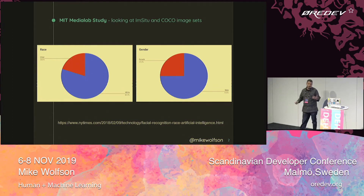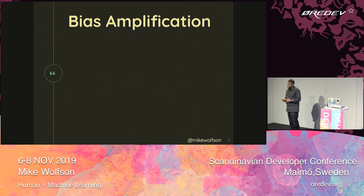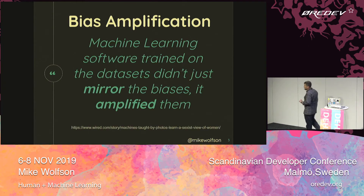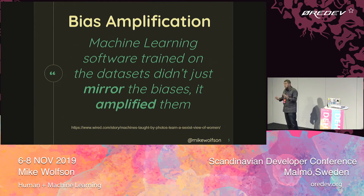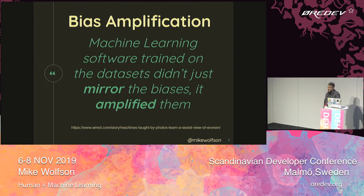And this is a huge problem, and I'm going to explain to you why. What the researchers discovered was that in machine learning systems, there's something called bias amplification. If you have a bad data set that doesn't have real-world data in there, machine learning software trained on bad data sets didn't just mirror the biases that existed — it actually amplified that bias. So let's take a look at how that manifested itself and how these things can really be big problems.